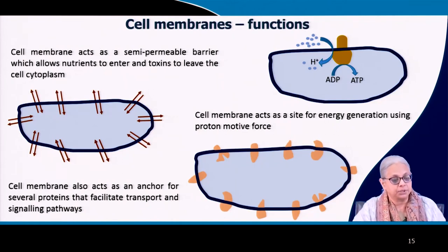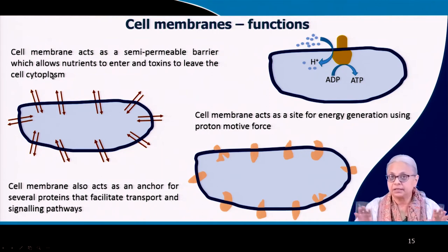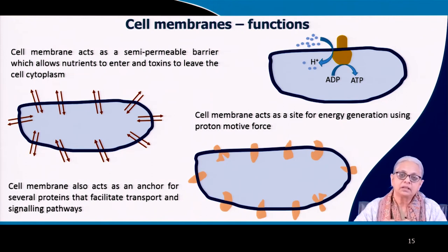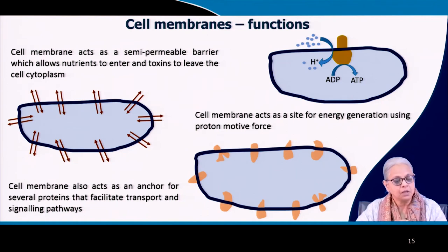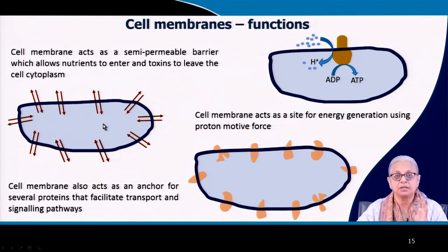What are the functions of the cell membrane? The cell membrane acts as a semi-permeable barrier because the phospholipid bilayer won't allow anything to come in and out freely. Only gases like oxygen may pass through this phospholipid bilayer. Cell membranes are semi-permeable barriers that allow nutrients to enter and toxins to leave the cytoplasm, and all transport except perhaps gases is mediated by proteins.